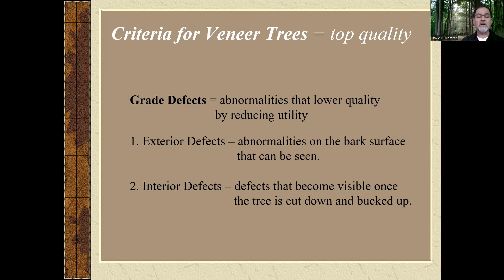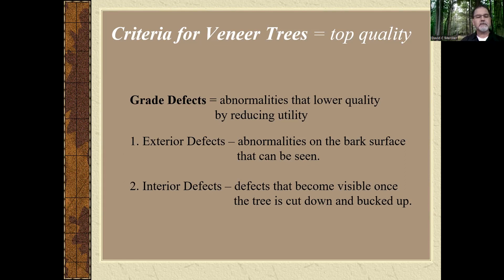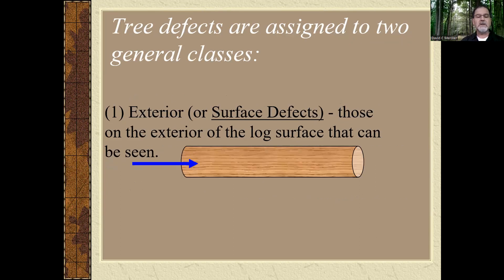There are two types of grade defects: exterior and interior. For a thorough review, I encourage you to refer to a Back Porch Forestry video titled Hardwood Log Defects. Exterior grade defects are abnormalities on the bark surface that can actually be seen. They indicate interior degrade and include such things as bumps and bulges, butt swell, knots, lesions, and sweep. Holes — whether large or small, including bird peck — are also exterior grade defects, as are seams caused by lightning, frost, or drought.